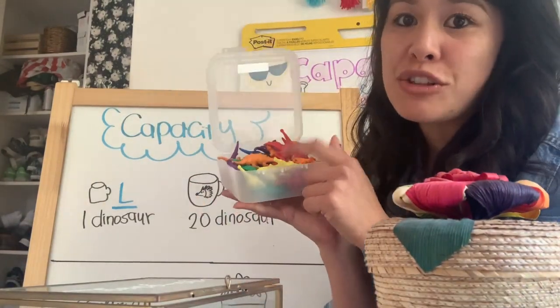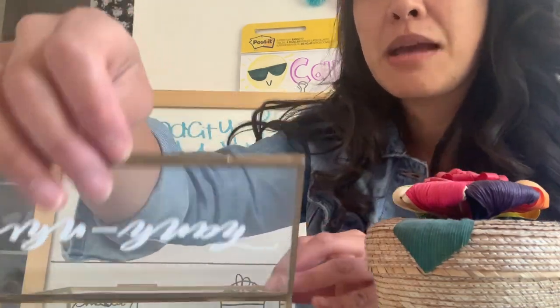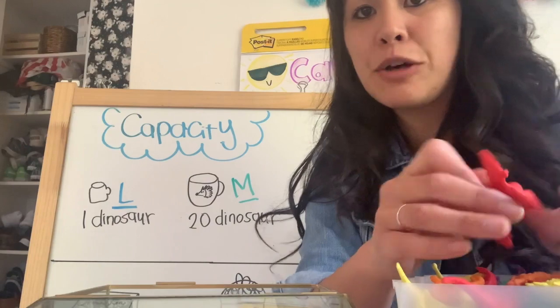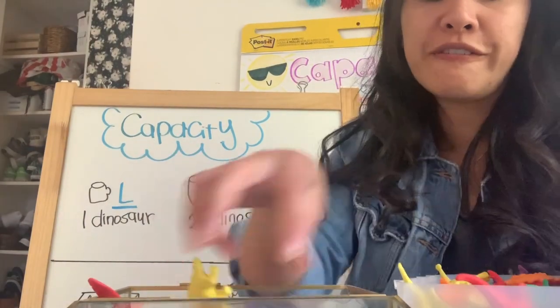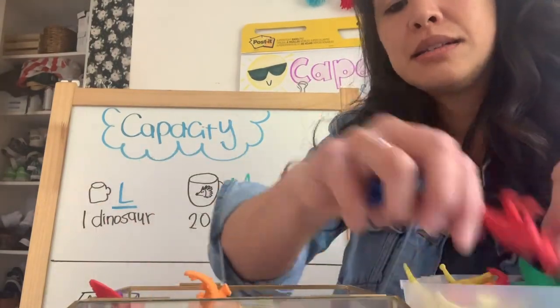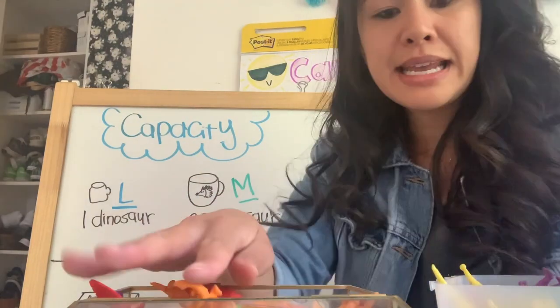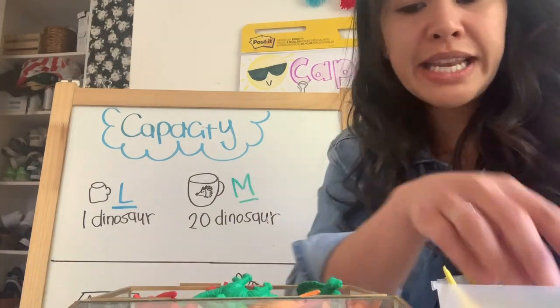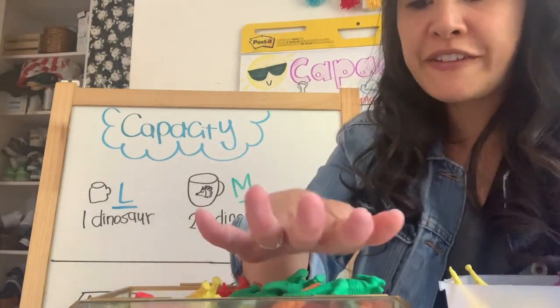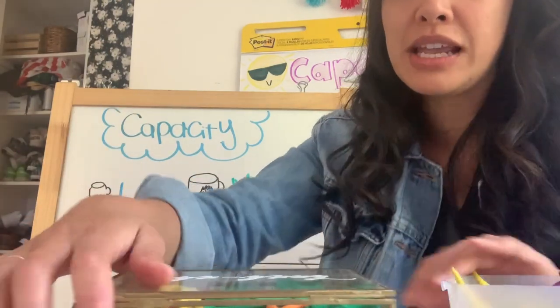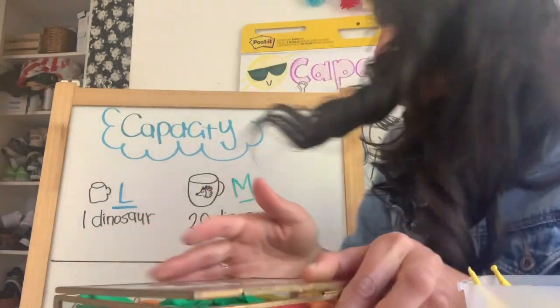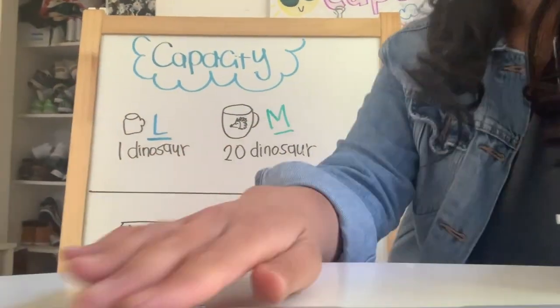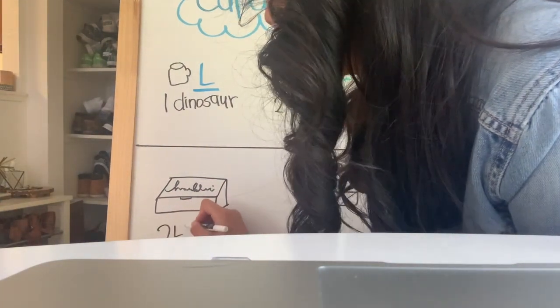I'm going to grab my dinosaurs because I have a lot and they're the same size. Let me fill up my jewelry box first. This looks like it's going to fit a lot, so let's count by twos — 2, 4, 6, 8, 10, 12, 14, 16, 18, 20, 22, 24. It looks like it can't fit anymore — barely closing. So this jewelry box fits 24 dinosaurs. Let me write that down on our whiteboard: Miss Fam's jewelry box holds 24 dinosaurs.